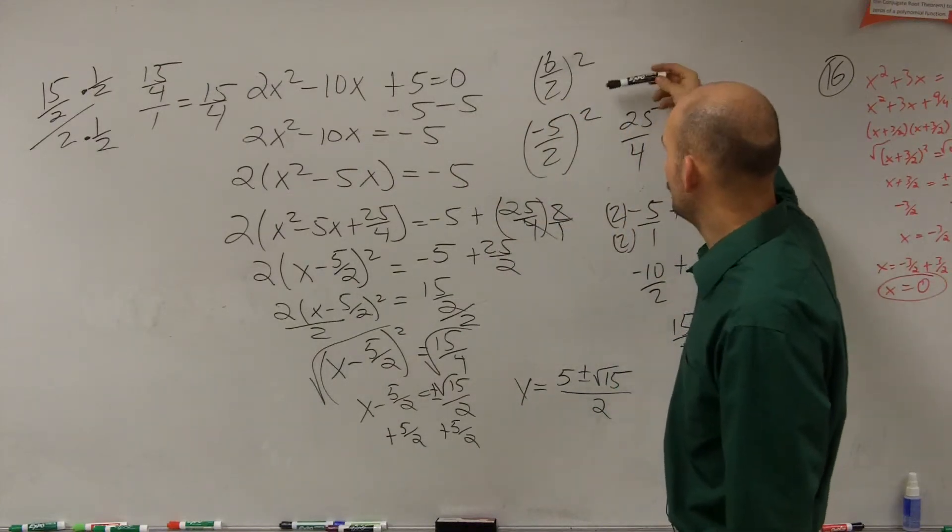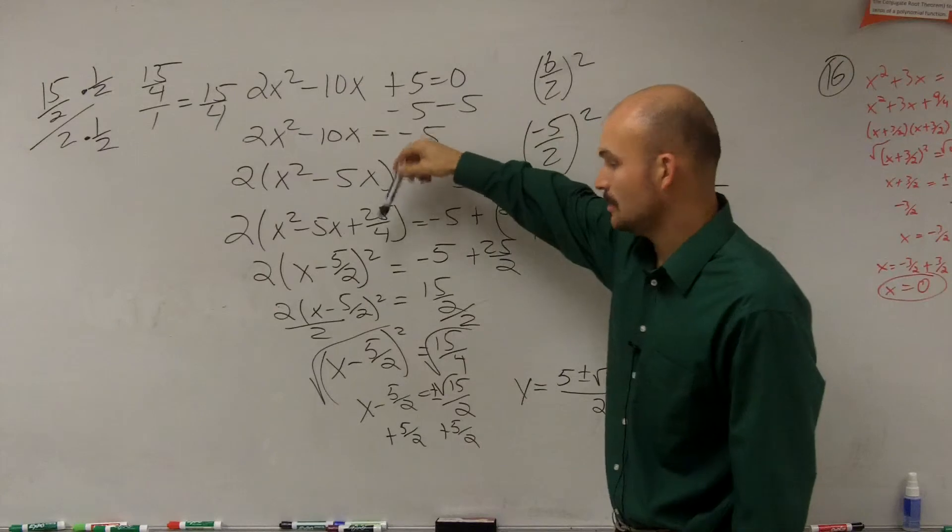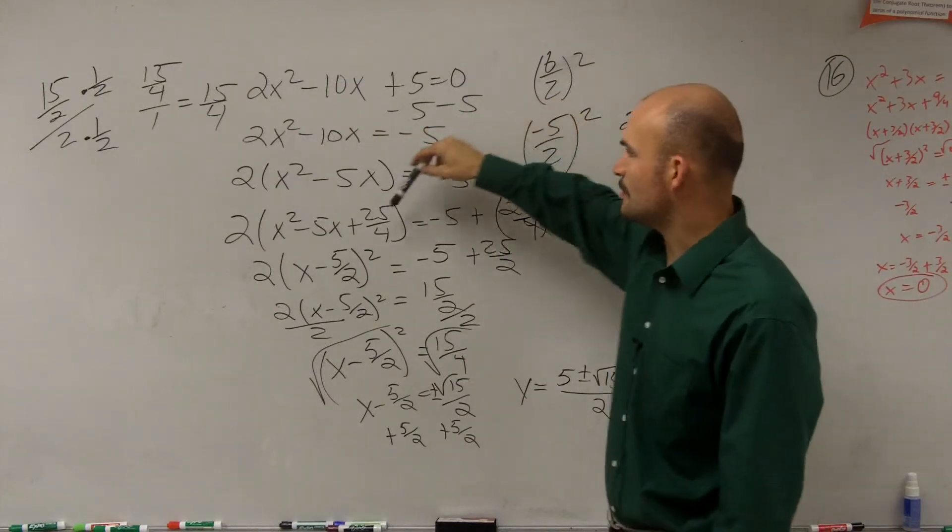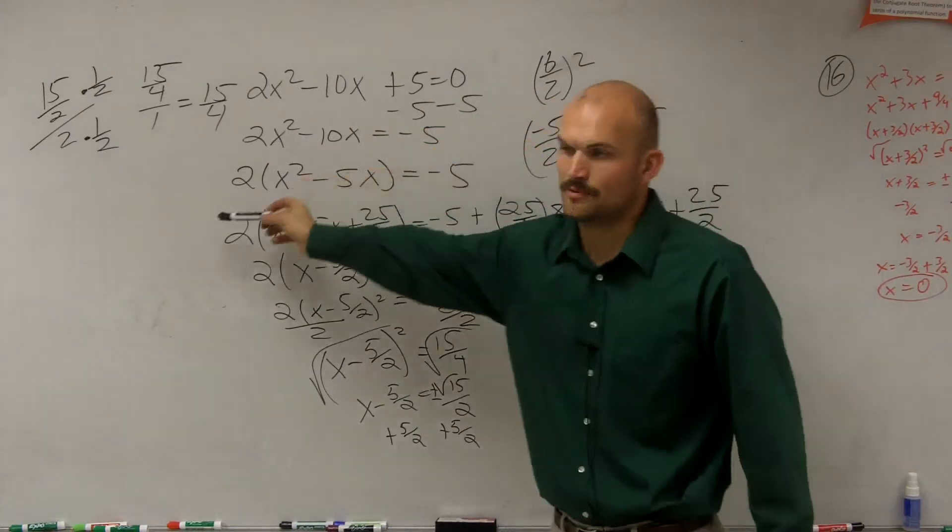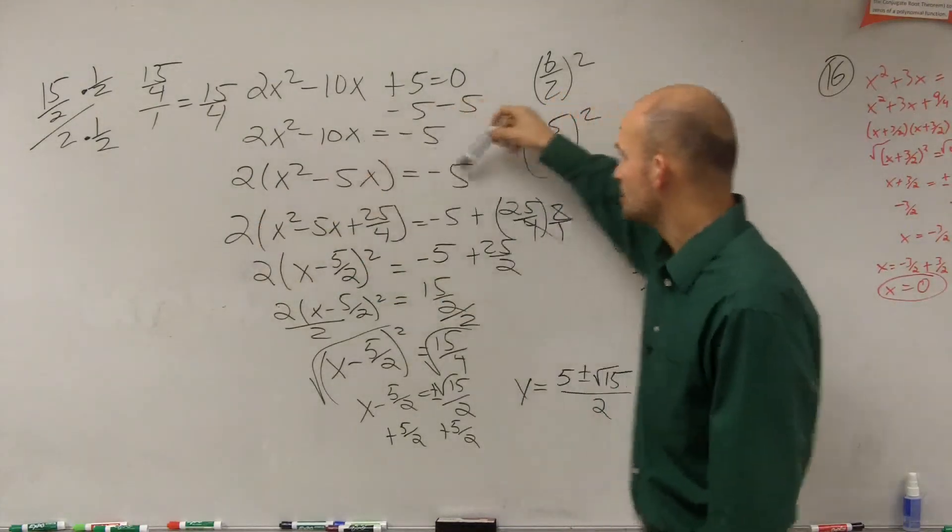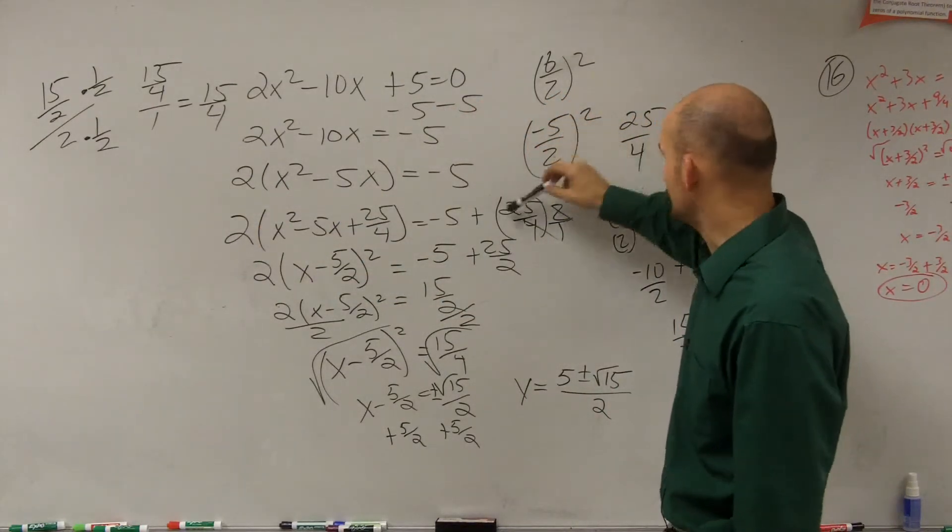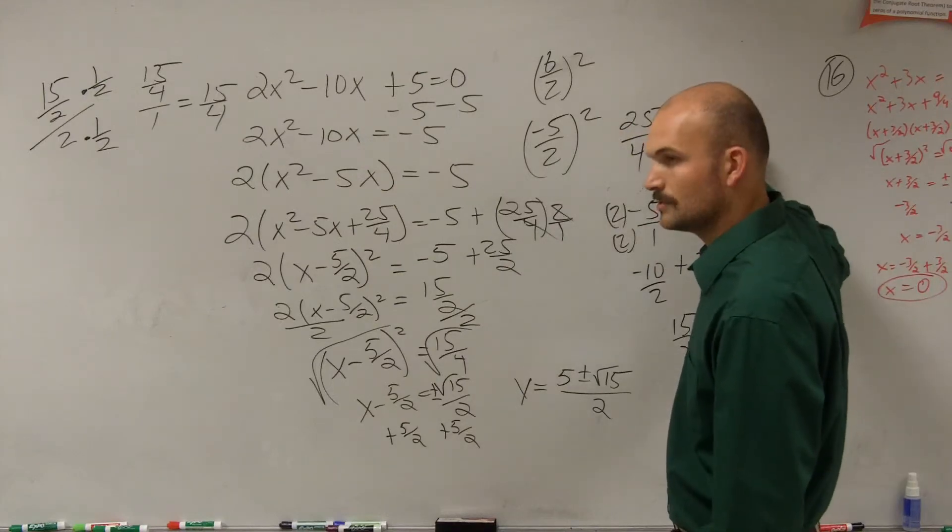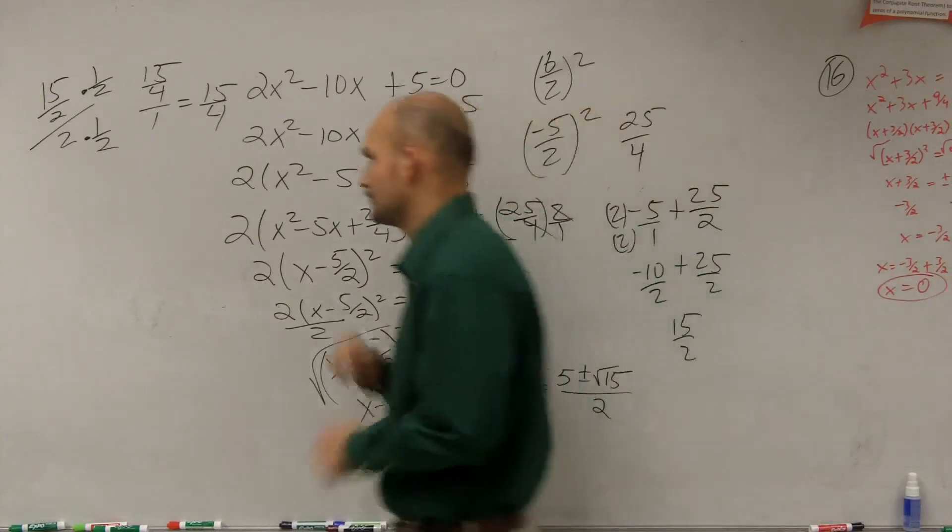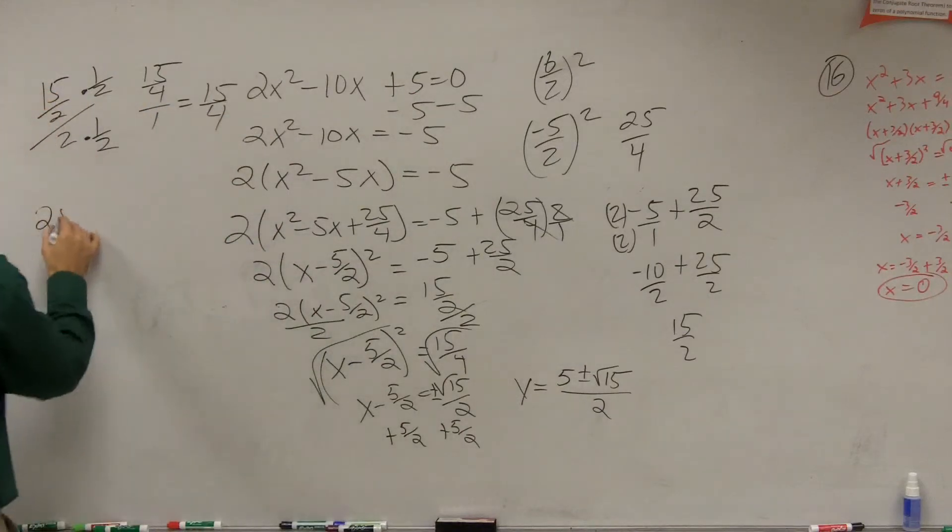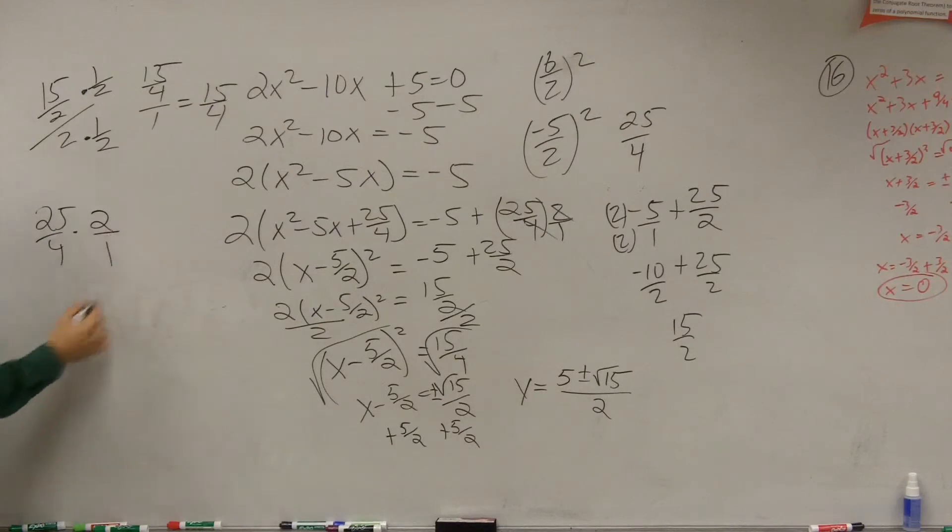Here? Okay, well remember I had 25 over 4. Then remember I had to add 25 over 4 on both sides. But remember each 25 over 4 was being multiplied by 2. So just think about it. 25 divided by 4 multiplied by 2 is 25 over 2. 25 divided by 4 times 2. How do you multiply fractions? Put it over 1. 25 times 2 is 50 divided by 4. That doesn't evenly divide into it. But if you reduce that, that reduces down to 25 over 2.